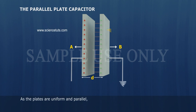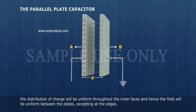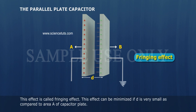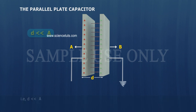As the plates are uniform and parallel, the distribution of charge will be uniform throughout the inner faces and hence the field will be uniform between the plates excepting at the edges. This effect is called fringing effect. This effect can be minimized if d is very small as compared to area A of capacitor plate, that is d much less than A.